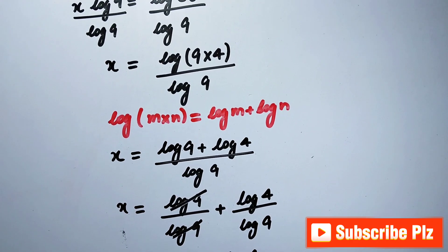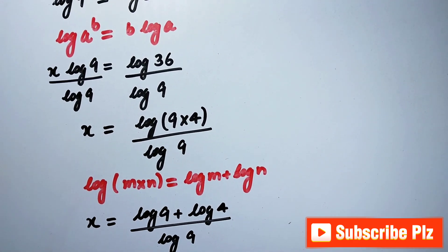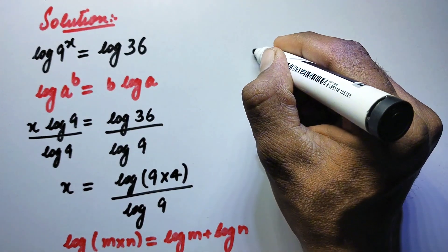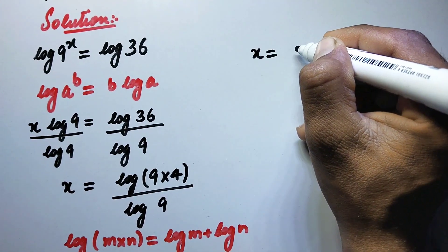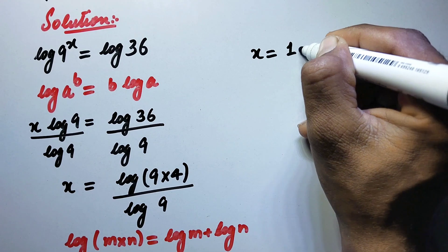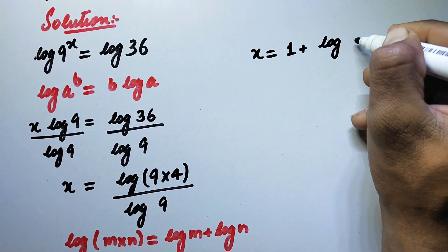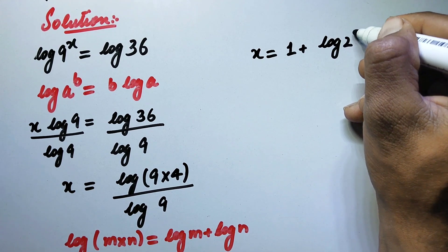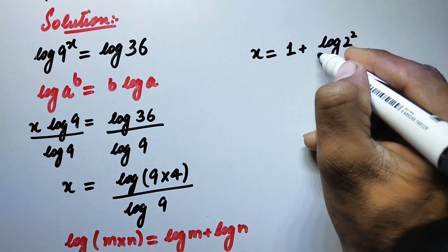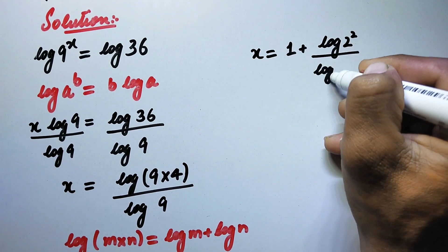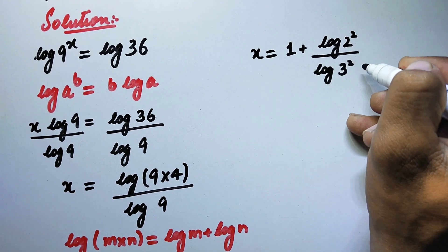Or we may further simplify it as here we can write x is equal to 1 plus log of 4, which is same as log of 2 square, divided by log of 9, which is same as log of 3 square.